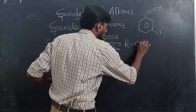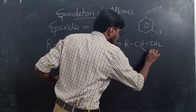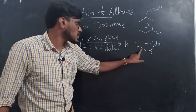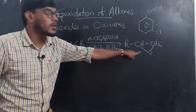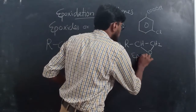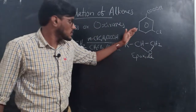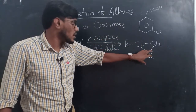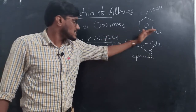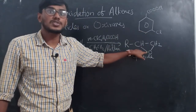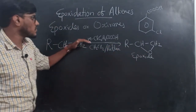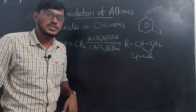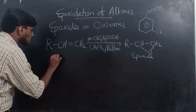...the product formed is RCH-CH2 with a bond between the two double-bonded carbons and an oxygen — this is called an epoxide. An epoxide is a stable three-membered ring with one oxygen atom. So alkenes on reaction with reagents like metachloroperbenzoic acid give epoxides or oxiranes.